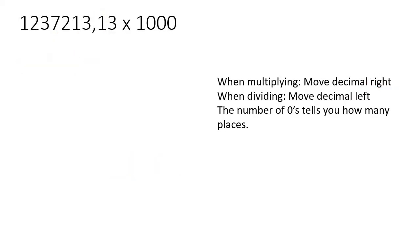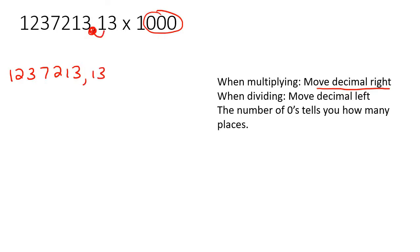Here we're multiplying, so we're going to move the decimal to the right, and there are three zeros — so we move it three places: one, two, three, giving us 7213. The decimal is here, so we go one, two, three, fill in that space with a zero and put your comma. And because there's a comma at the end now, we don't like to leave it like that — so that is what the final answer looks like.